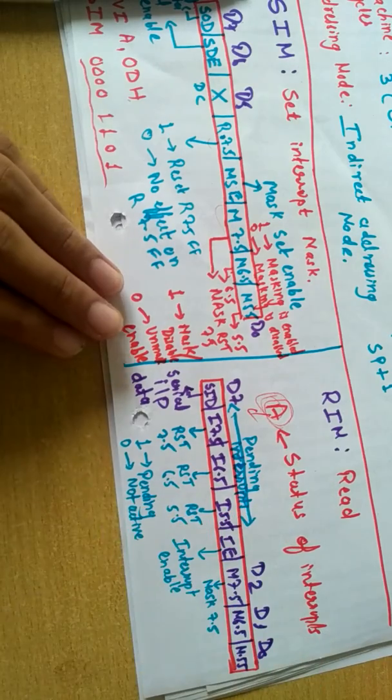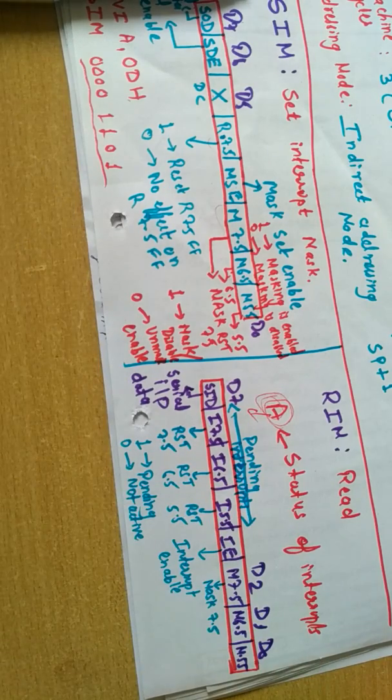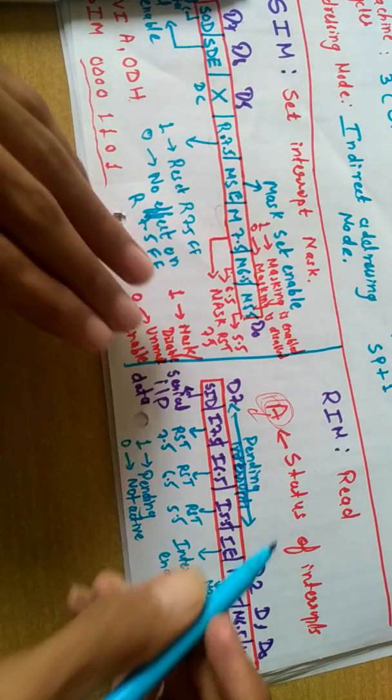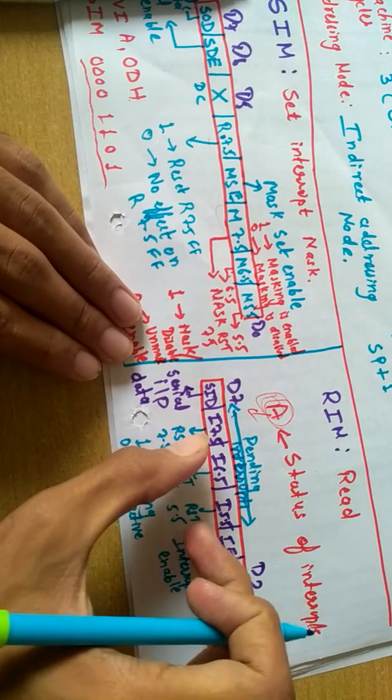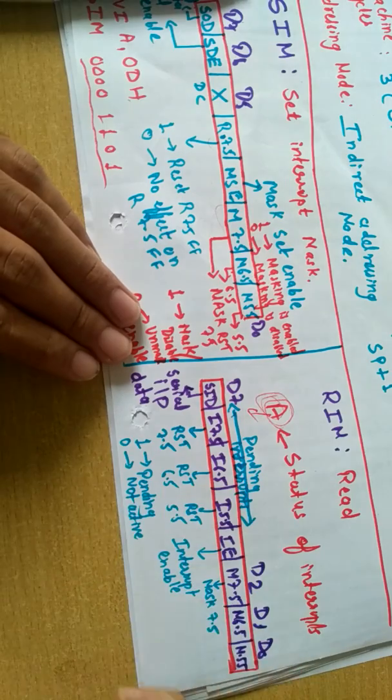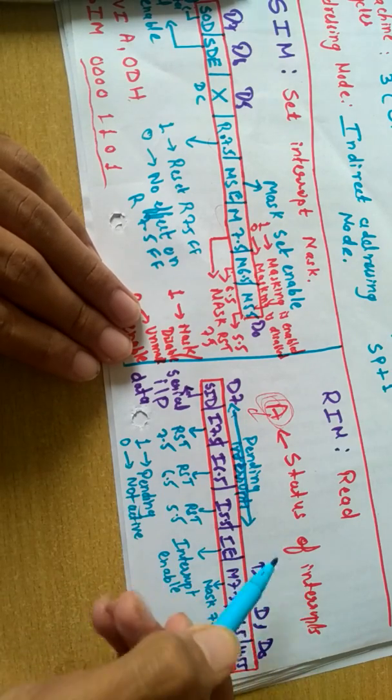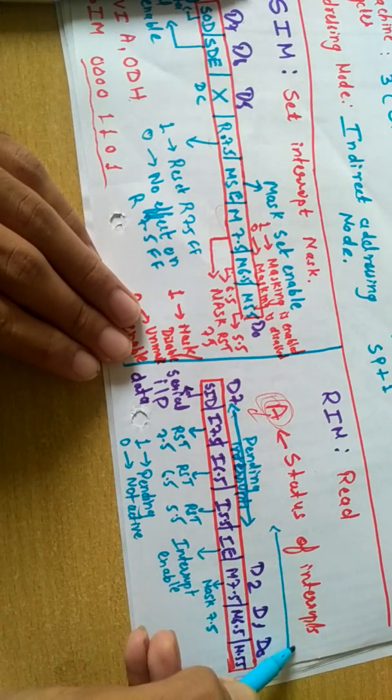This gives the status of our pending interrupts, that is, interrupts had occurred but whether they are executed, whether they are being served or not, that is, service is being given to that interrupt or not, is being given by these three bits.